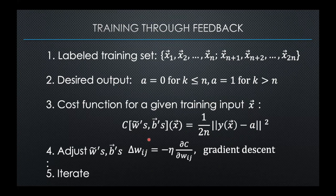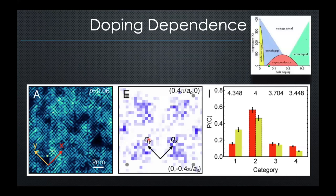Applying this principle to the STM data: we look at doping dependencies. We first train the neural network with simulated data, as I showed, with four possible options. We then give the actual data at different dopings — whose Fourier transforms might look like this — and the neural network comes to a decision. The rightmost column is the neural network's decision. It is showing category two at the highest rate of being selected.